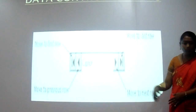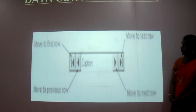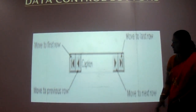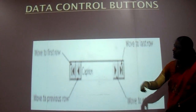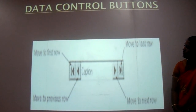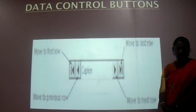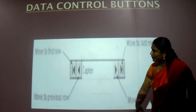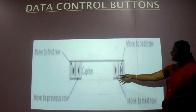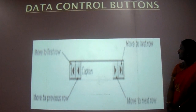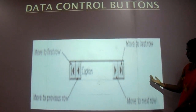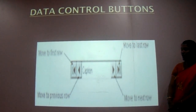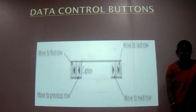Next, we are going to see the data control buttons. It has four buttons. The first button is used to view the first row. The second one gives the previous row. The third one is used to give the next row. The fourth one moves to the last row of the record.